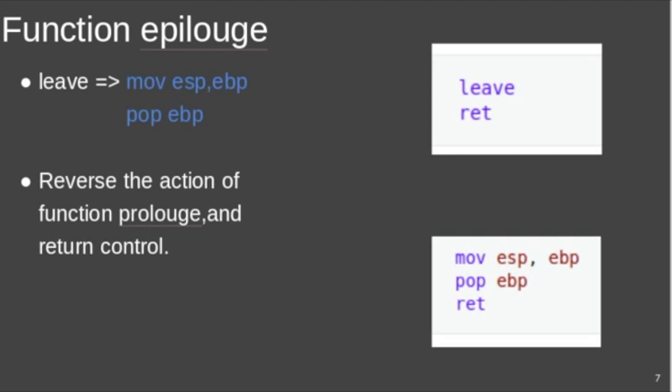Function epilogue reverses the action of the function prolog and returns control to the calling function. Basically what it does is two instructions: leave instruction and ret instruction. The leave instruction is basically move ESP to EBP and pop EBP.